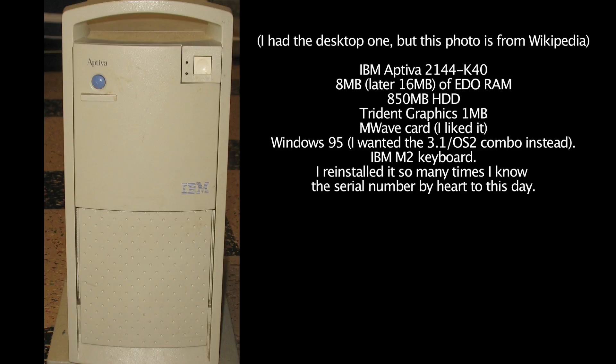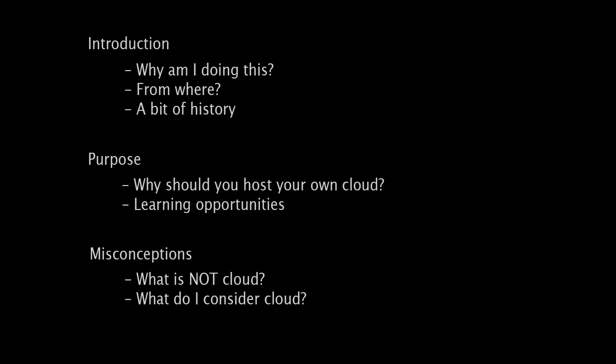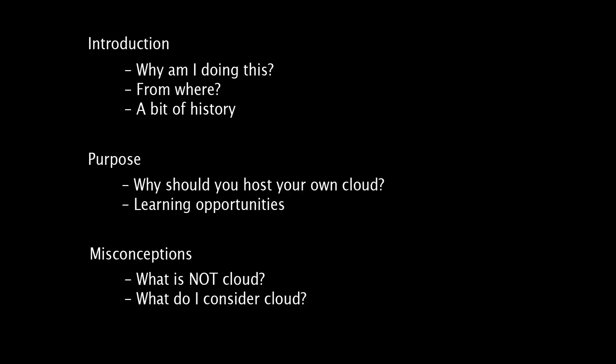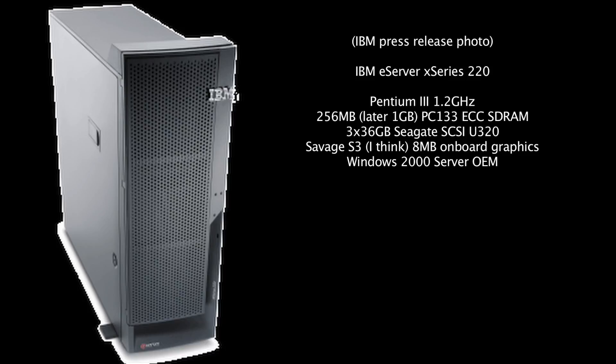Then years later I got a Dell Dimension XPS T500 with Windows 2000. I installed a SCSI controller and it had an 18GB hard drive together with the stock 18GB that came with it. Years later I found a dual processor motherboard and ended up upgrading it to dual 500MHz Pentium 3 processors. Then my first employer went bankrupt and I received as part of payment an IBM E-server X-series 220, which had a Pentium 3 processor. It received more hard drives, extra RAM, and was also running Windows 2000 for a while.